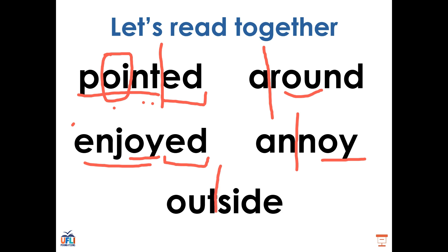Finally, we have this word here. We can split it between its syllables. We have the OU at the beginning saying OW. Very good. Then we have silent E — it's hopping back, making that vowel long and strong, so the I is going to say its long sound: I. So we can sound it out: OW, T — OUT — and S-I-D — SIDE — gives us the word OUTSIDE. Outside. Very good.